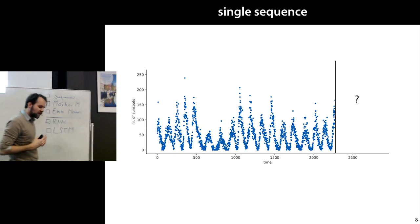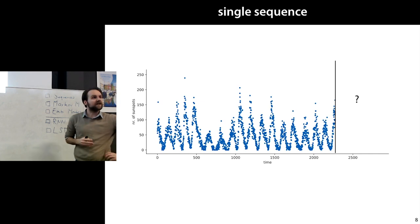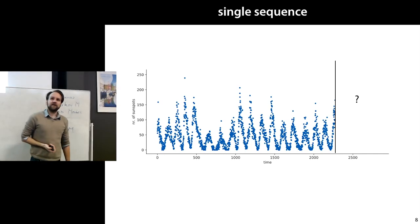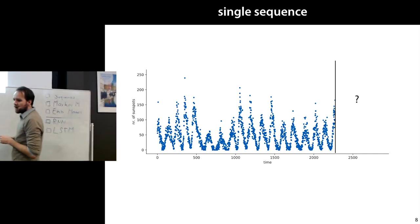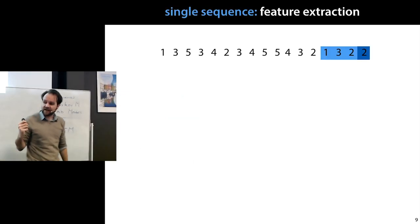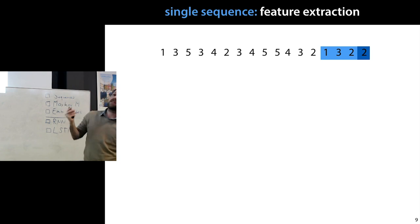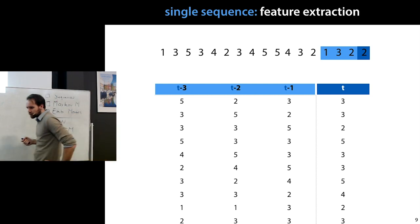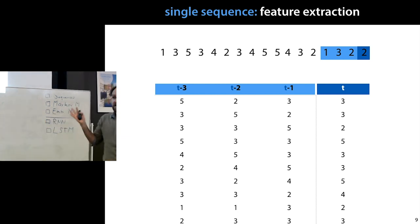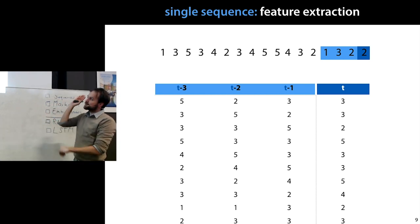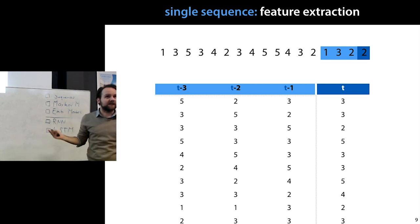A simple approach for the single-sequence case is to translate it into tabular data we're used to. We have one sequence, and we chop it into instances where each instance is a point in time. For each point in time — the current dark blue point — we extract features: the preceding three values. We slide that window over the dataset, giving us a table with features t-minus-1, t-minus-2, t-minus-3, and a target value to predict. Now we can apply any regression algorithm we want.